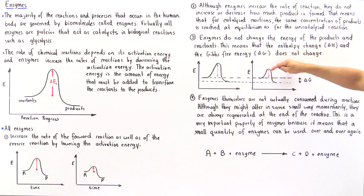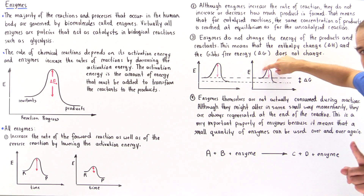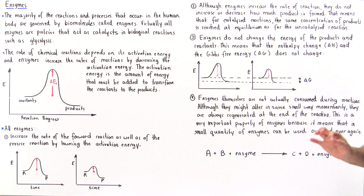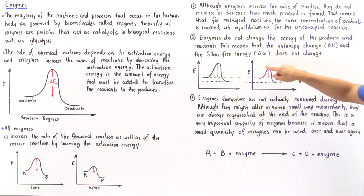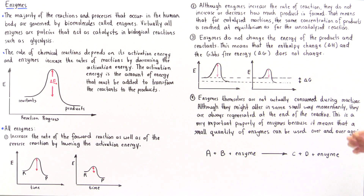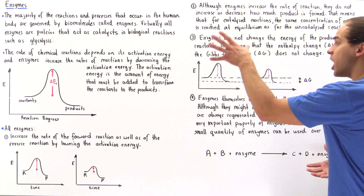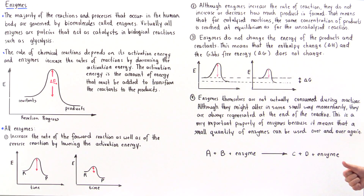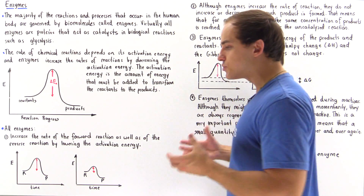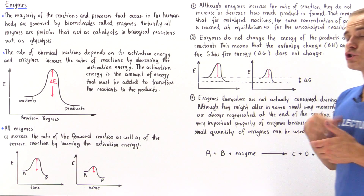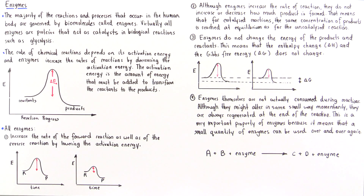We lower the activation energy, but notice that the energy of the reactants and products does not change. When we calculate the change in Gibbs free energy or the change in enthalpy between the products and our reactants, we see that it's exactly the same for both the uncatalyzed and the catalyzed case. Enzymes do not actually affect the energy of the products, nor do they affect the energy of the reactants.